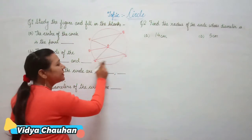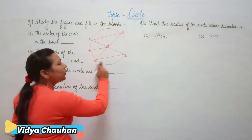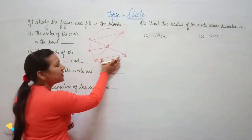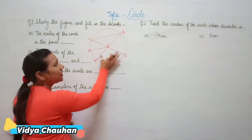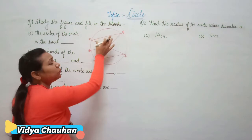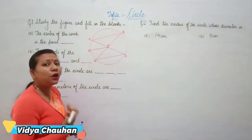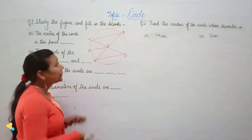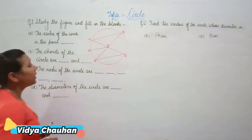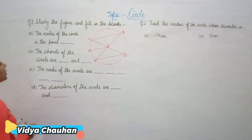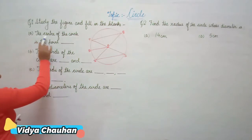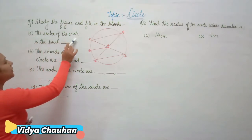The line segment which joins any two points on the circumference — like RS and PQ — these two are chords of the circle. So let us start answering the questions one by one.